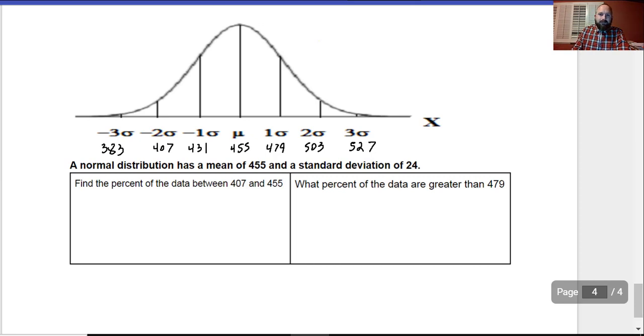Remember that this is 34% and 34%. This right here is 13.5% and 13.5%. And this is 2.35% on each side. Find the percent of the data between 407 and 455. Well, that's as simple as adding these together. And then what percent of the data is greater than 479? Well, basically you could take 50% and subtract out what isn't part of the data. 50% minus that. Go ahead and show your math right here. I hope you guys have a great day. I'll see you guys in class. Bye.